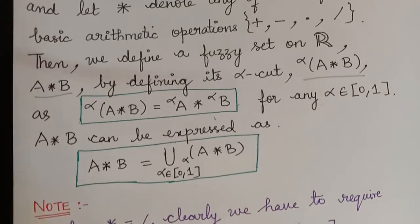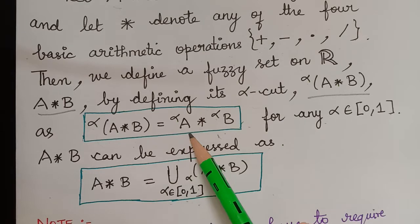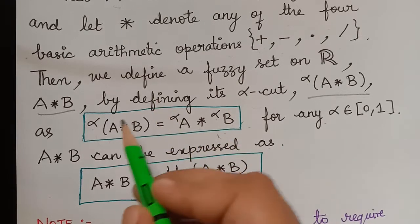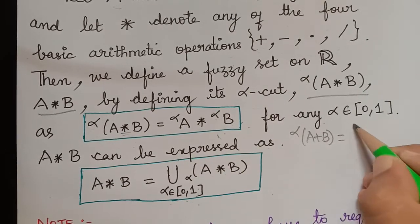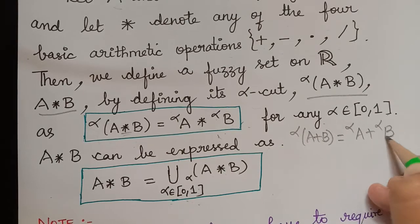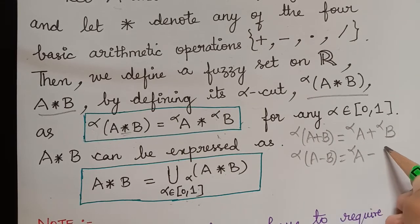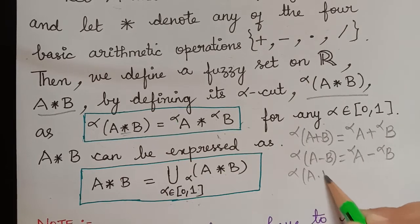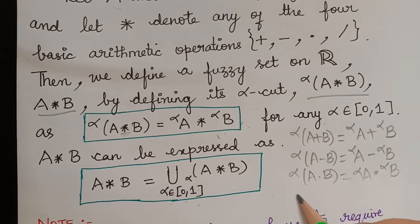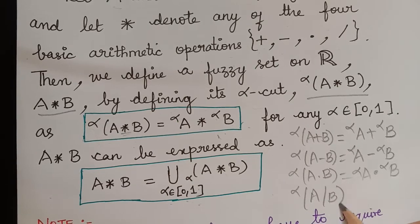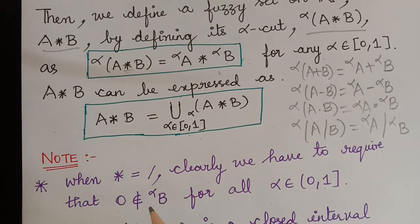The fuzzy arithmetic developed from interval arithmetic states that the alpha cut of A star B equals the alpha cut of A star the alpha cut of B. For example, if the star operation is addition, the alpha cut of A plus B equals the alpha cut of A plus the alpha cut of B. If subtraction, the alpha cut of A minus B equals the alpha cut of A minus the alpha cut of B. If multiplication, the alpha cut of A times B equals the alpha cut of A multiplied by the alpha cut of B. And the alpha cut of A divided by B equals the alpha cut of A divided by the alpha cut of B, provided that 0 is not an element of the alpha cut of B.